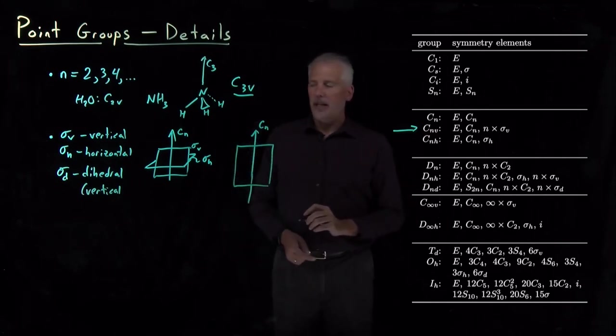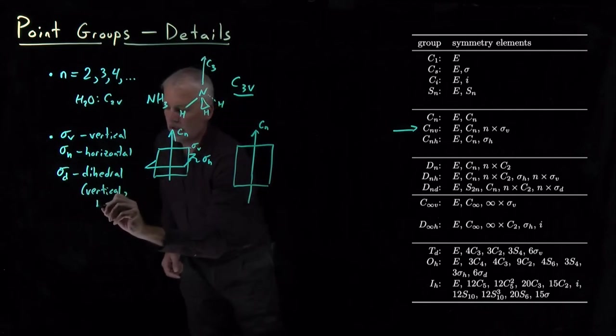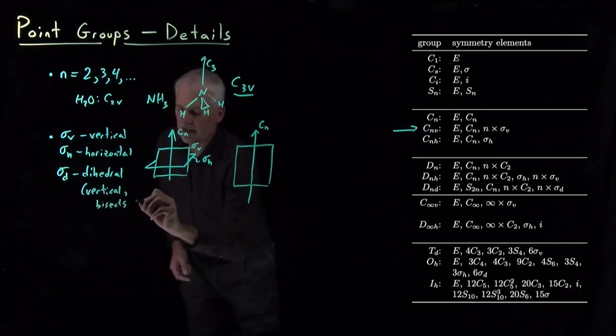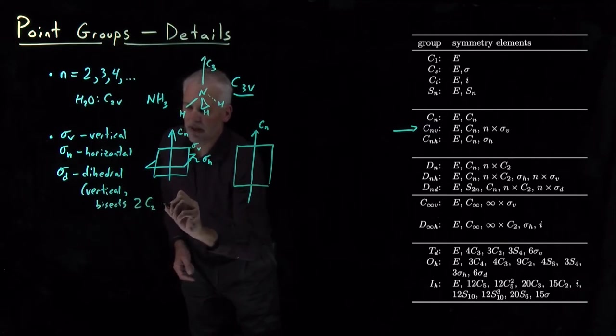But it also happens to bisect two different C2 axes.